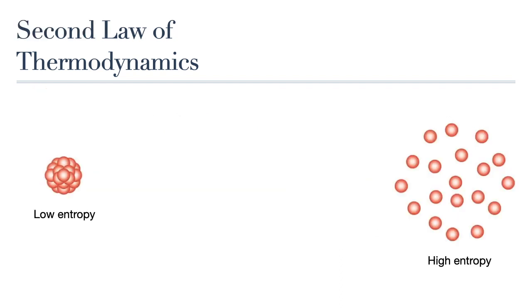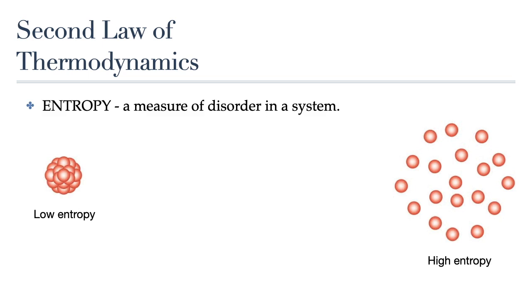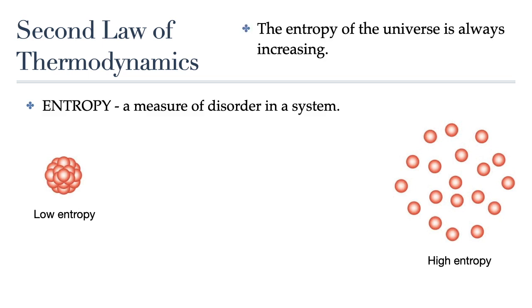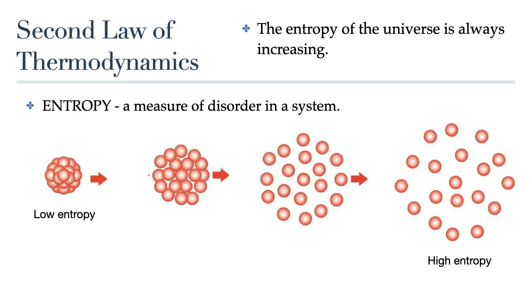The second law of thermodynamics has to do with something called entropy. Entropy is a term that refers to the amount of disorder in a system. The most simple way of stating the second law of thermodynamics is that the state of entropy of the entire universe, as an isolated system, will always increase over time. In other words, the entropy of the universe is always increasing.